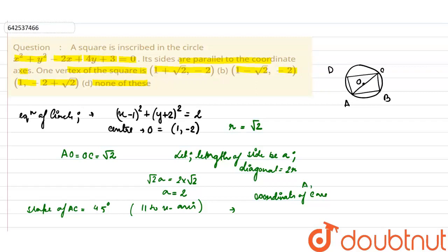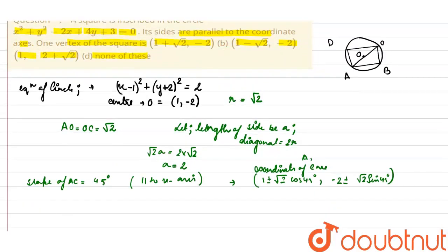...1 ± √2 cos 45°, -2 ± √2 sin 45°. When we simplify these coordinates, we get (2, -1) and (0, -3).